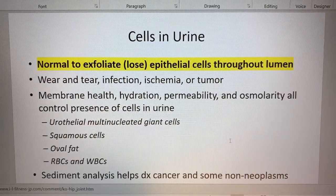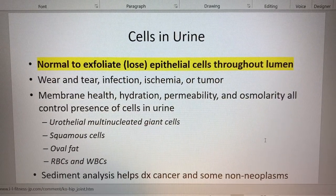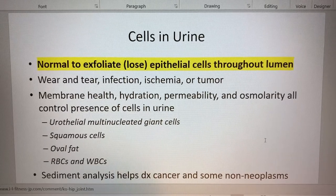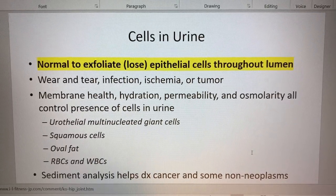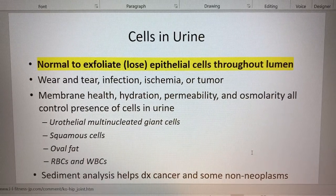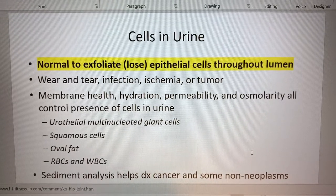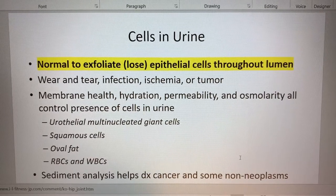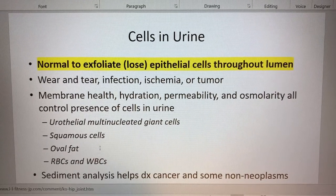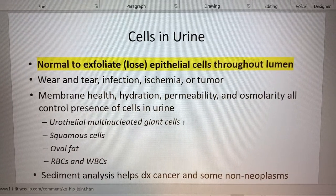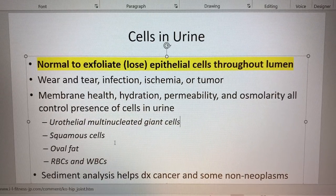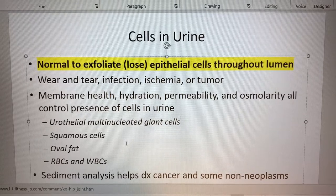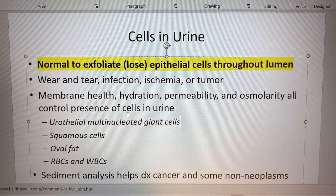Let's look at cells in the urine - types of cells that could be there. All types: fat cells, squamous cells, red blood cells, white blood cells - leukocytes - anything that could indicate an infection, urothelial multinucleated giant cells. Not anything you need to know for this class, but just examples of cells that could be in the urine.